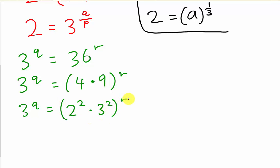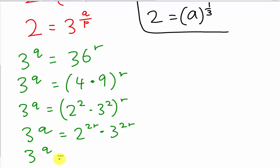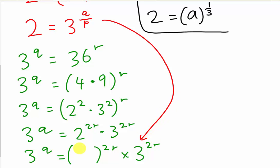I move the R inside, so I get 3^Q equals 2^(2R) multiplied by 3^(2R). Then I substitute my value of 2 from the first equation. I know 2 equals 3^(Q/P), so I replace 2 with 3^(Q/P) in the expression.